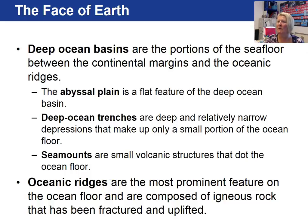Once you get past the continental rise, you enter the deep ocean basins where there are abyssal plains — flat features. There are trenches, which are deep narrow depressions, and seamounts, which are small volcanic structures scattered across the ocean floor. Another prominent feature of oceans are the ocean ridges that wind through all ocean basins, composed of igneous rock that has been fractured and uplifted.